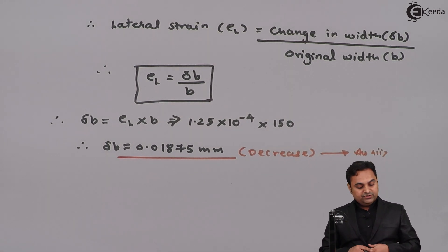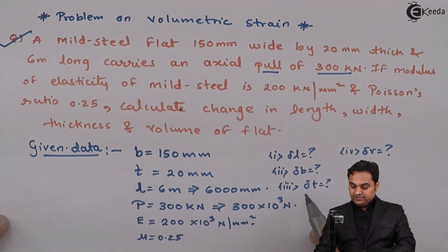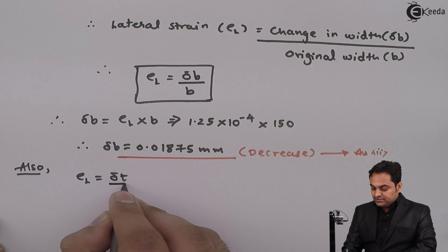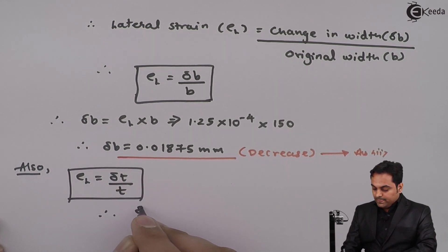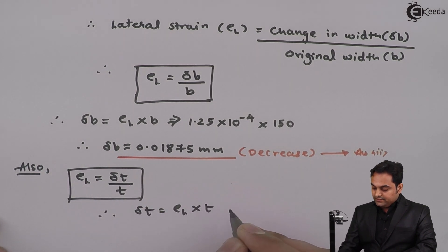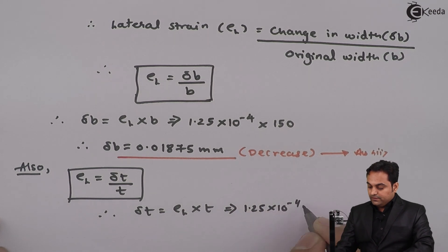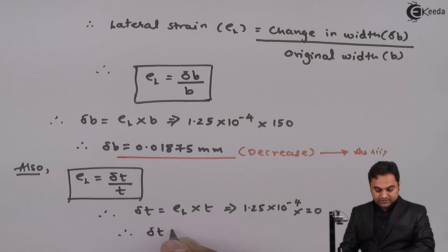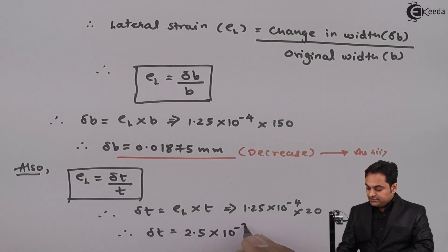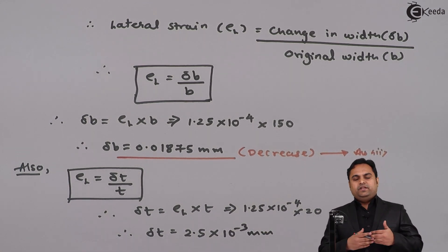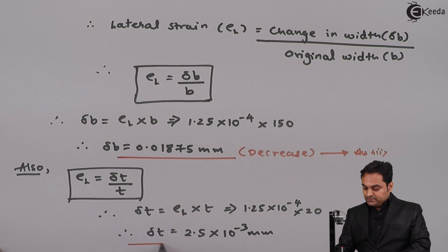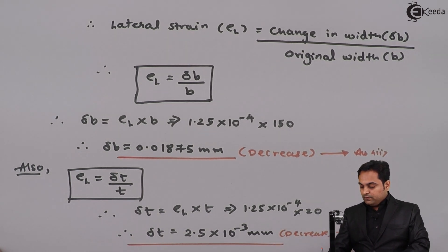For change in thickness, lateral strain = δT / T, so δT = lateral strain × T = 1.25 × 10⁻⁴ × 20 = 2.5 × 10⁻³ mm. As explained, when load is parallel to the length and is a pull type, length increases while width and thickness decrease. So this is a decrease in thickness.